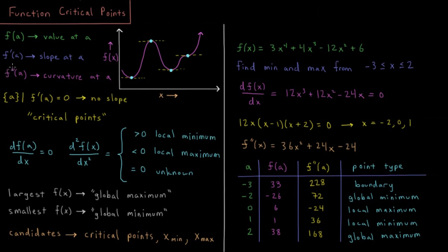And f'' gives us the curvature at x equals a. So if we want the set of all points a such that the first derivative at a is equal to 0 — that is, where we have no slope — those are the set of points we would call critical points of this function.